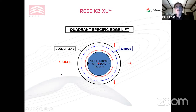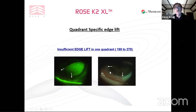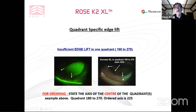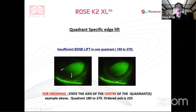For segment-specific edge lifts, you only affect the fit outside the limbus. Here's a case where the lens is tight in one quadrant; I wanted to increase the lift there while the rest was fine. I increased the edge lift at axis 225 — halfway between 180 and 270. You state the center axis when ordering. You can see how this immediately opened up the fluorescence in that quadrant. The lens has prism ballast to help it locate — automatically included in the design. When you put the lens in, regardless of orientation, within two or three blinks it will turn around and align that quadrant to where you require the excess lift.